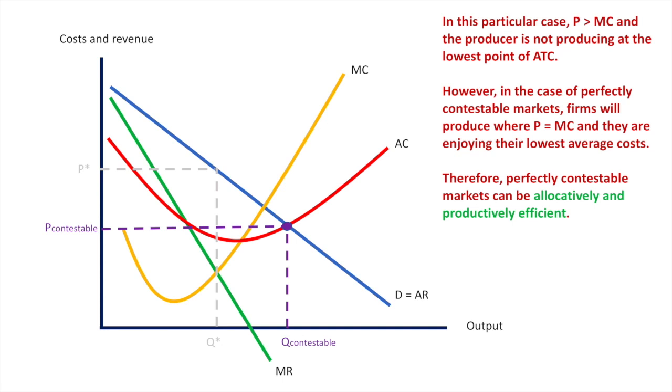However, in perfectly contestable markets, firms will behave similarly to how they do in perfect competition. They will sell their products at a price that is equal to marginal cost and produce at the lowest average costs. In perfectly contestable markets, allocative and productive efficiency are more likely to be achieved.